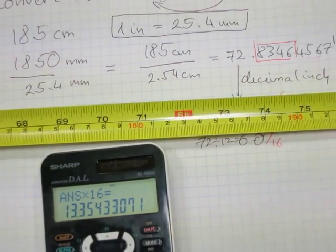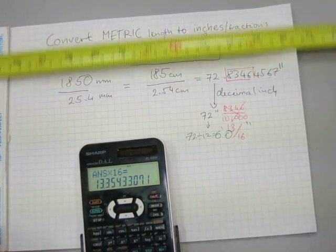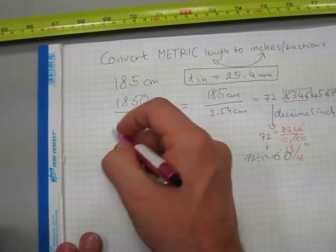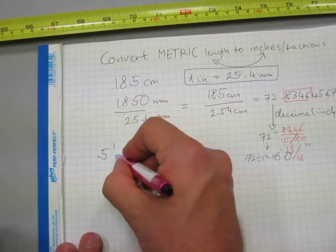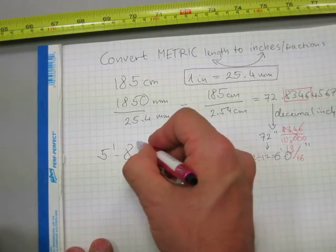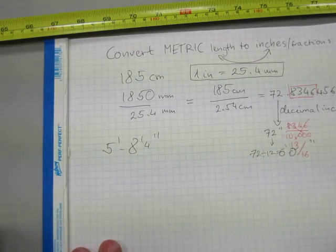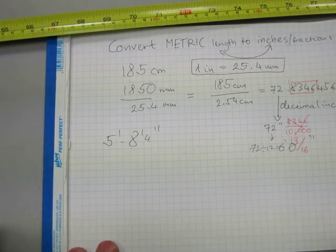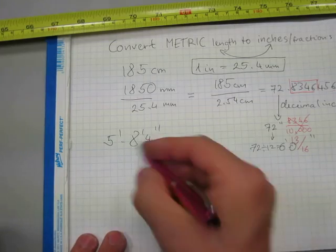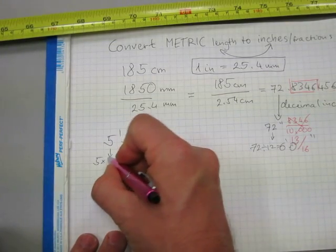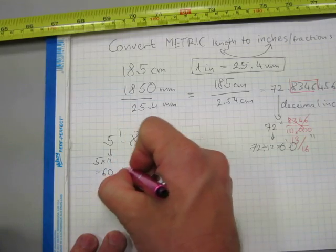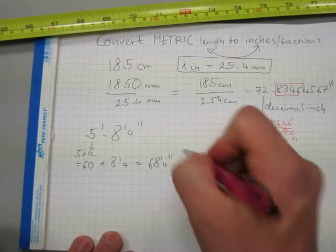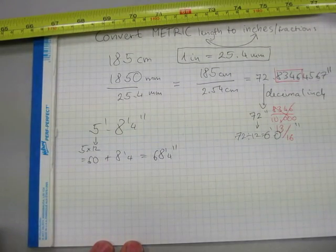Let's zoom out. Let's do another conversion the other way around. For example, somebody says that his or her height is 5 feet, 8 inches and a quarter. We need to make inches and an inch decimal out of it to make it work. 5 feet is 5 times 12, that's 60 inches plus 8 and a quarter equals 68 and a quarter inches.